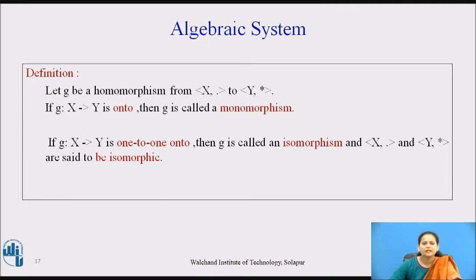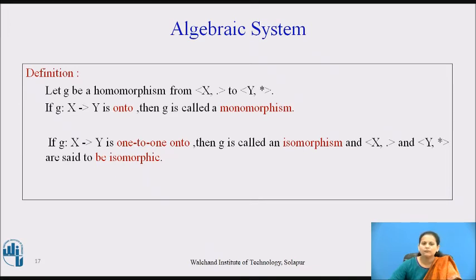Let g be a homomorphism from (X, ·) to (Y, ★). If the mapping g: X → Y is onto, then g is called a monomorphism. As we have seen the types of mappings — one-to-one, onto, one-to-one onto — if g is onto then it is known as monomorphism, which is nothing but an extension of homomorphism with g being onto.